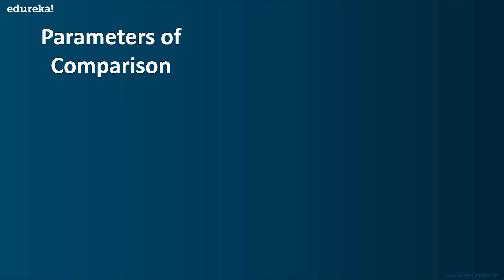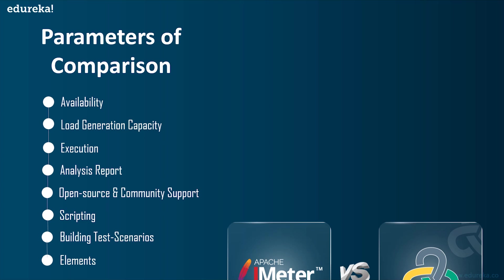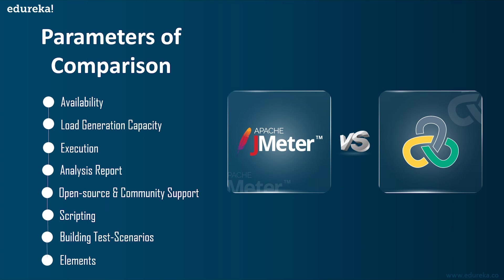Now let's look at the different parameters of comparison that will help us understand both of these performance testing tools better. This will give a clear idea on how these two differ from each other and help you choose your perfect performance testing tool. LoadRunner holds a strong position in the market, and Apache JMeter is quickly gaining ground. The comparison parameters include availability, load generation capacity, execution, analysis report, open source and community support, scripting, building test scenarios, and elements.